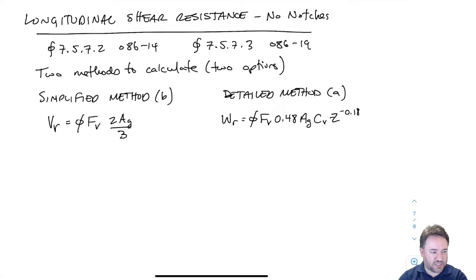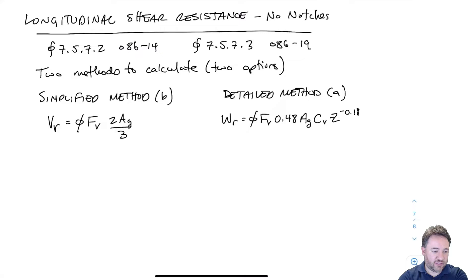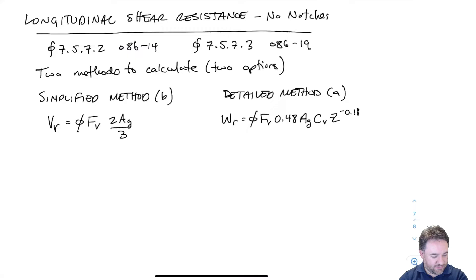The detailed method is quite a bit different. It's a shear resistance, but it's not done in terms of shear force — it's done in terms of total force. WR is a resistance to the total force on the beam. So if I had W along the length of the beam, a distributed load in kilonewtons per meter, then the total load would be W times L, and that is what I would check against WR. It's a bit of a funny way to do it, and you don't find this kind of approach very typically in other materials.